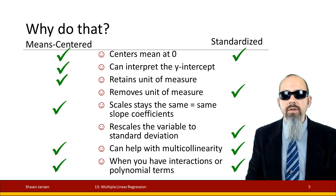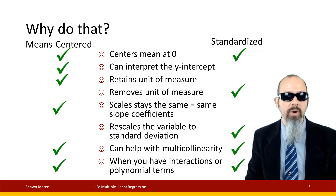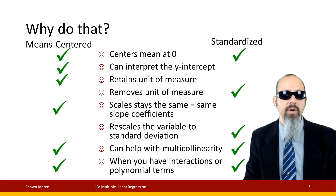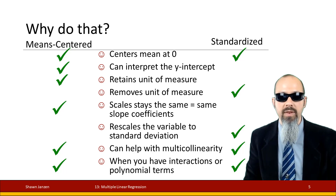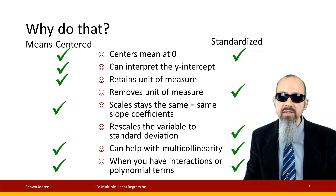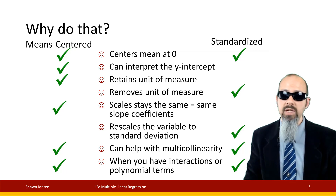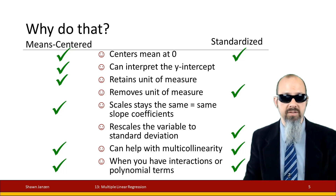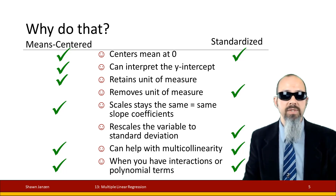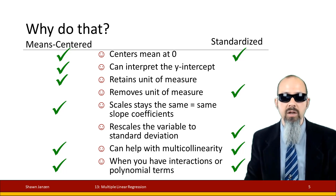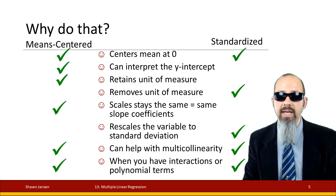So why would we go ahead and do this? There are a few different reasons. Both mean centering and standardization will give a mean of zero. Mean centering allows you to interpret a meaningful y-intercept; standardized does not as much. Mean centering retains its units of measure, whereas standardized removes the units — that's part of why it's called standardized. Mean centering keeps the same slope coefficients, whereas standardizing re-scales the variable against a standard deviation.